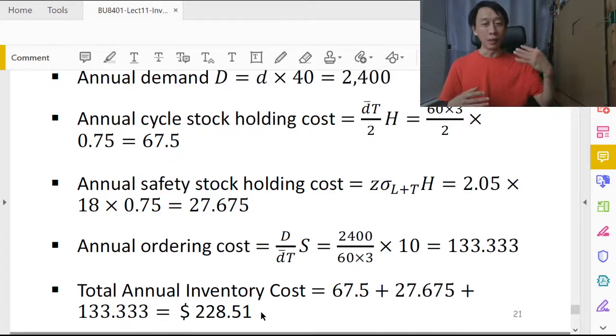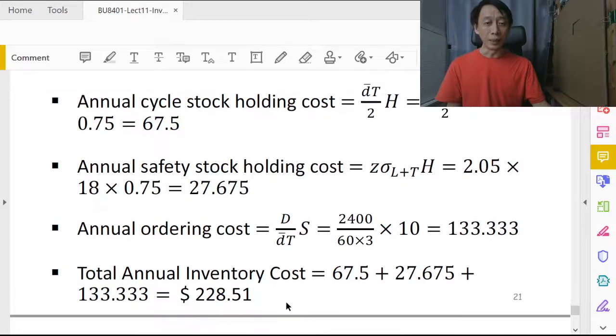So basically that's a simple but quick but illustrative kind of example to show an application of inventory management with periodic review and dynamic demand.